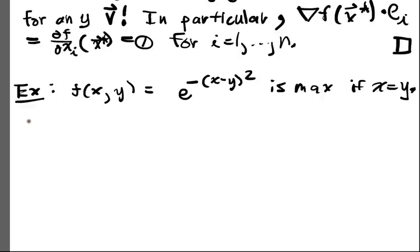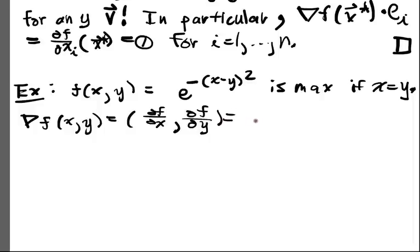And now we want to verify that this is in fact going to be the case, that the gradient is going to vanish at all these points. So the gradient of f at (x,y) equals (∂f/∂x, ∂f/∂y). And we simply compute that.